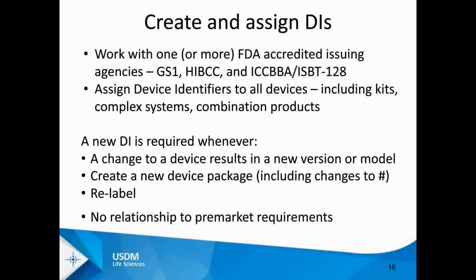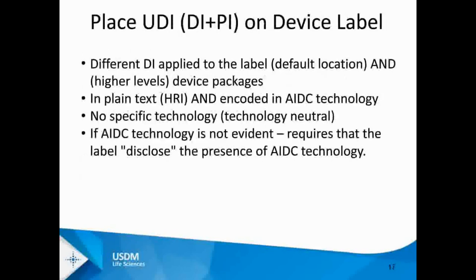Once device identifiers are created, they go on the label along with production identifiers — that's where the two components come together into the UDI. The UDI must be in plain text (human readable) and encoded in some form of AIDC technology — linear barcodes, two-dimensional barcodes, or RFID. FDA did not limit or constrain the technology; it just requires an appropriate AIDC technology per your issuing agency.